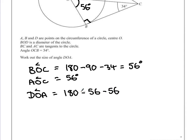Well 56 add 56 is 112. So if we take away 112 from 180, we end up with 68 degrees. And that would be your answer.